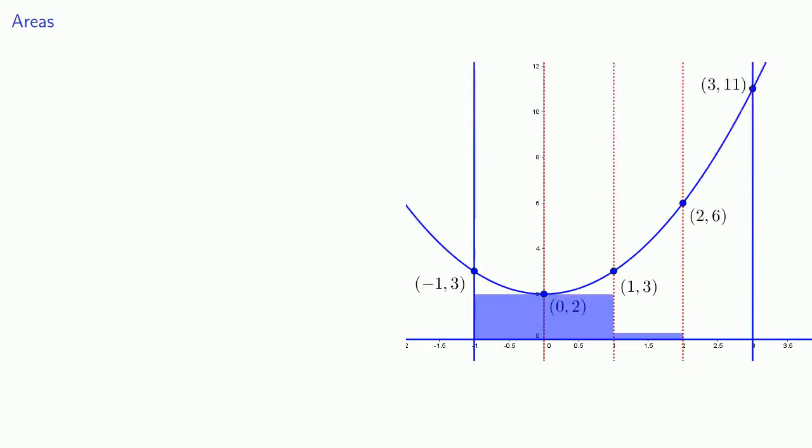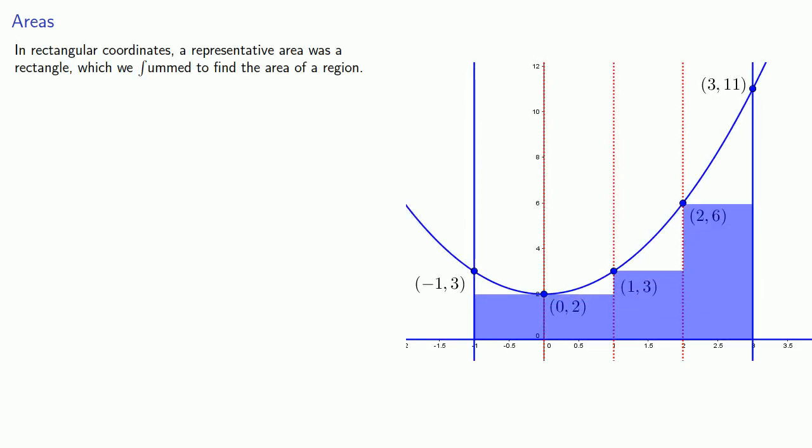When we found the area under a curve in rectangular coordinates, we partitioned our region into a bunch of rectangles. And so in rectangular coordinates, a representative area was a rectangle which we summed to find the area of the region.